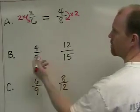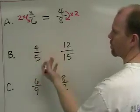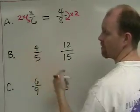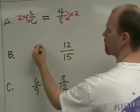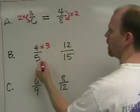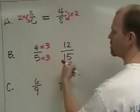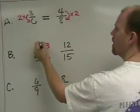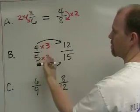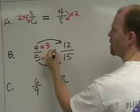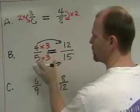Similarly, in Example B, there's no vertical relationship between the 4 and the 5 that is easy to see. However, if we look horizontally, we could see that 4 times 3 is 12, and 5 times 3 is 15. And since these two numbers are related by the same factor, we know these two ratios are equal to each other.